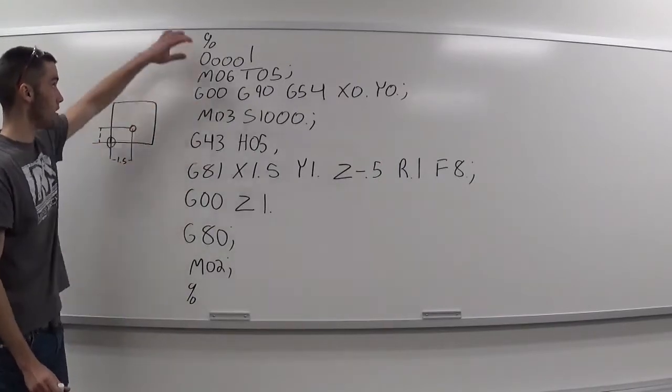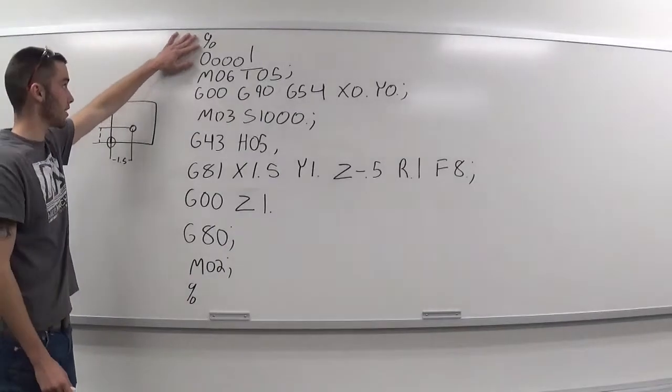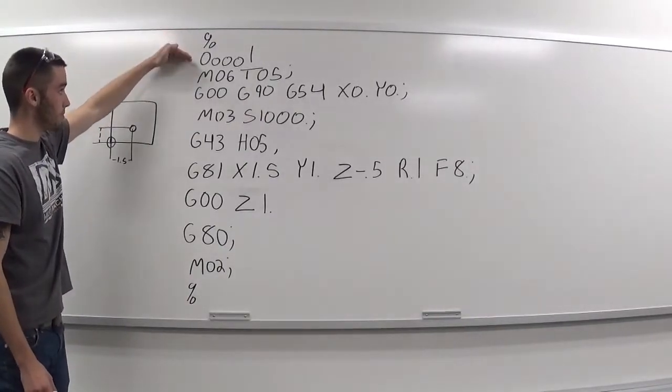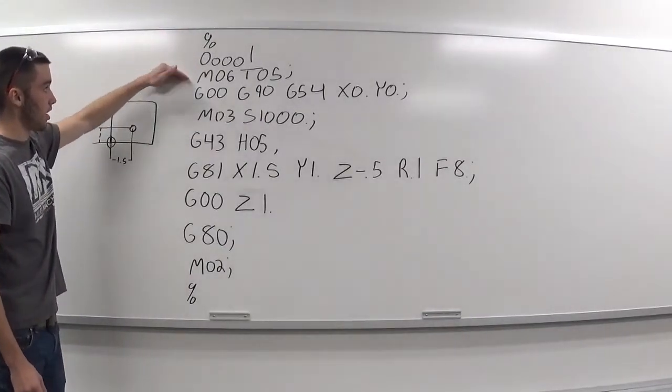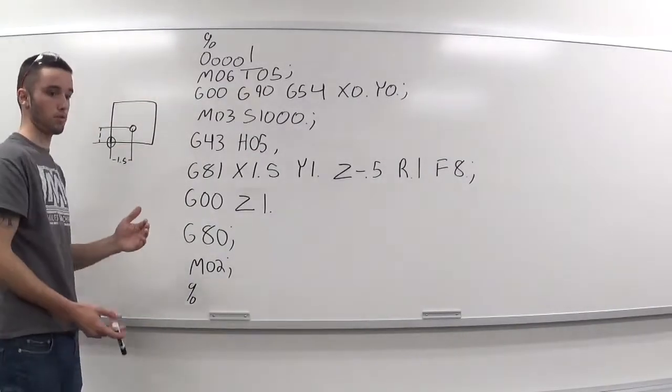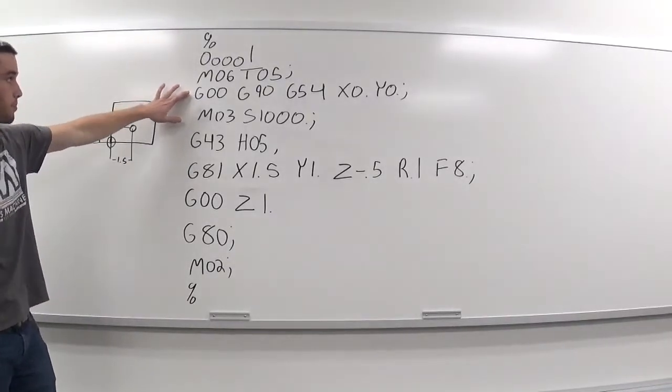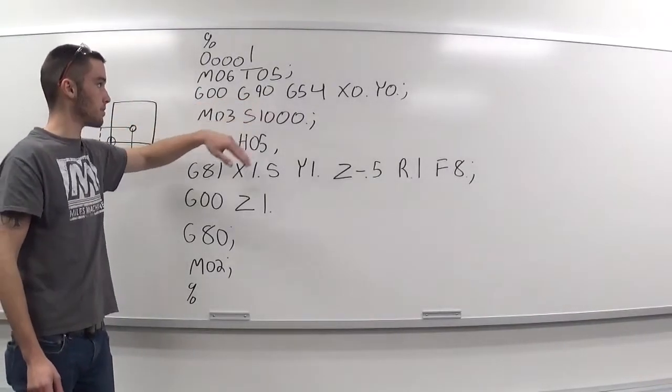And so, we start out with the percent sign, letting the machine know where the program is beginning. Program name, M06, T05, that's calling the tool change to go to tool 5. We have G00, which is your rapid movement. Your G90, which is absolute dimensioning.